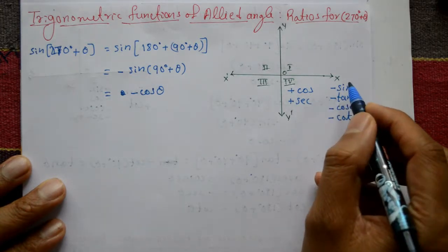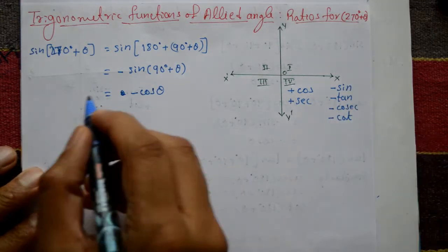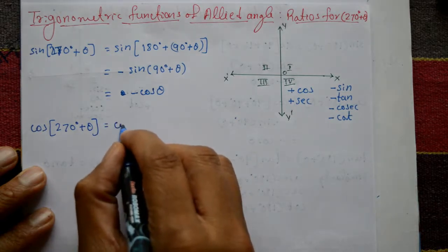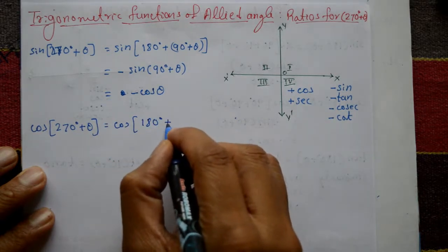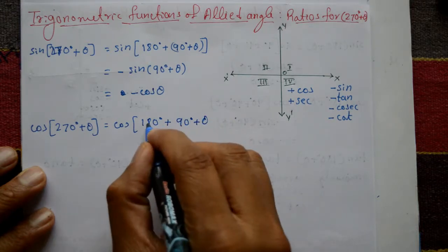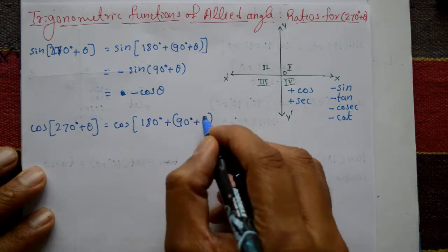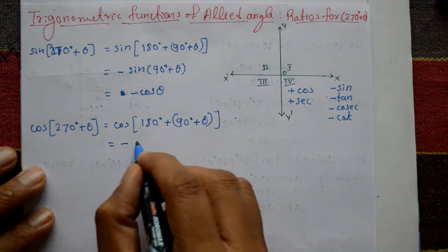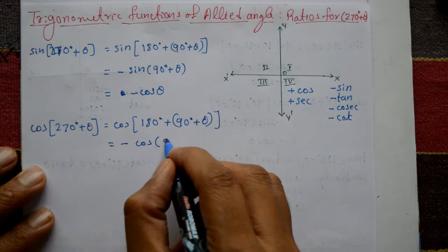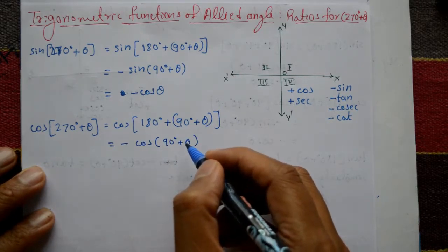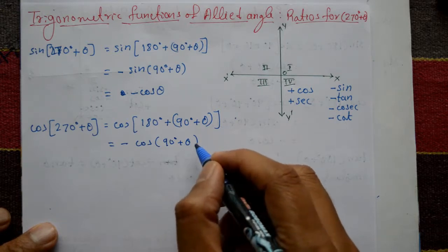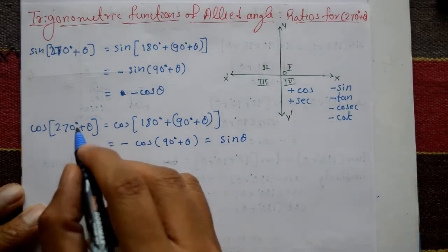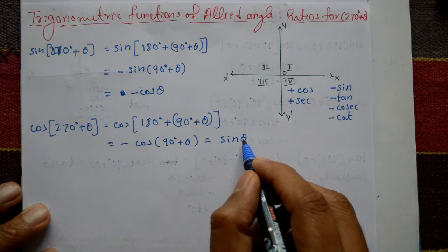Next, cos of 270 degrees plus theta equals cos of 180 degrees plus (90 degrees plus theta). Consider this part as theta. Cos of 180 plus theta equals minus cos theta, so we get minus cos of (90 degrees plus theta). Now cos of 90 plus theta equals minus sin theta, so minus times minus gives plus sin theta. Therefore cos of 270 degrees plus theta equals sin theta. Cosine is positive in the fourth quadrant.